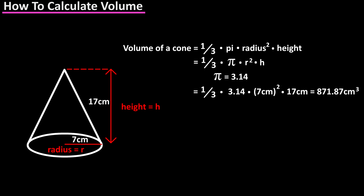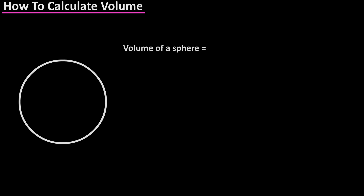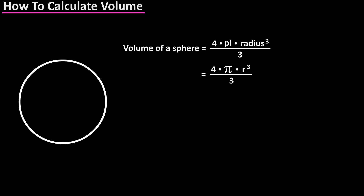The formula for calculating the volume of a sphere is 4 times pi times R to the third divided by 3. Again, pi is a constant approximately equal to 3.14 and R is the radius of the sphere.